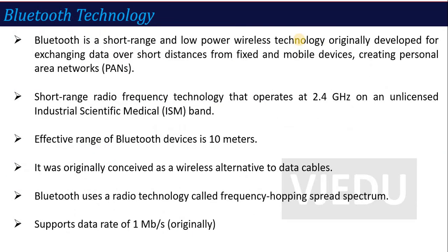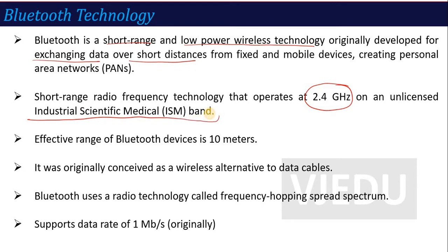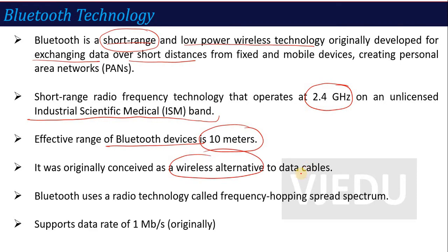Bluetooth is a short range, low power wireless technology originally developed for exchanging data over short distances from fixed and mobile devices, creating a personal area network. It operates at 2.4 GHz on an unlicensed Industrial Scientific Medical (ISM) band. The effective range of Bluetooth devices is up to about 10 meters. Bluetooth is considered a wireless alternative to data cables.